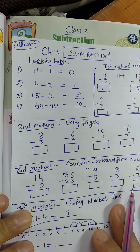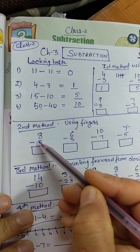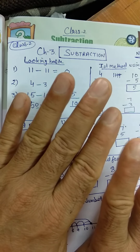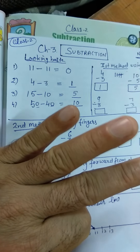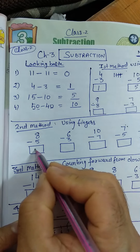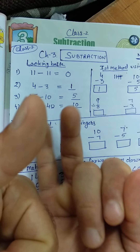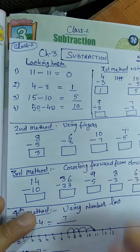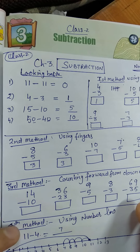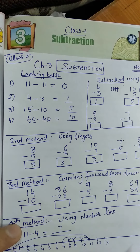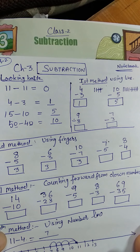The second method is using fingers, just as we used fingers for addition. For 8 minus 5: open 8 fingers, then close 5 fingers — 1, 2, 3, 4, 5. How much is left? 3. So the answer is 3. For 6 minus 3: open 6 fingers (5 plus 1), then close 3. The answer is 3. If there are 10, open both hands (10 fingers), then close 7 fingers — the left fingers will be 3. You can pause the video and practice the remaining parts.